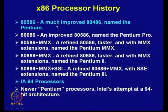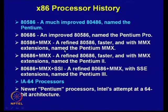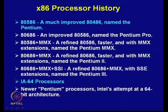The 80586 — a much improved version of 80486 — was named Pentium. Subsequently, some upgrades were proposed: an improved version named Pentium Pro, then the 80586 MMX — a refined, faster version with multimedia extensions — named Pentium 2. And 80686 plus MMX plus SSE, which provides much more powerful processing capability, leading to Pentium 3.